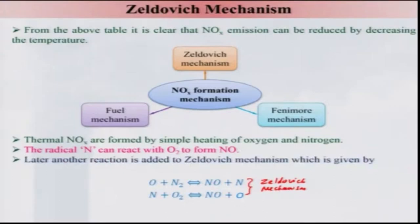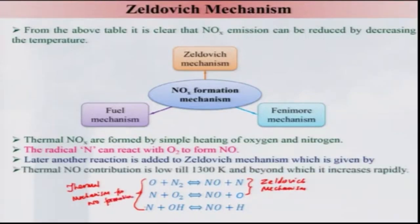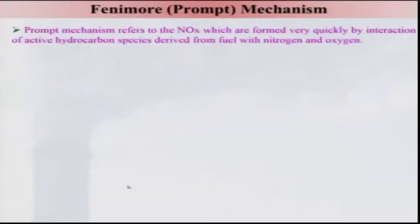Later, an additional reaction was added to the Zeldovich mechanism: N + OH → NO + H. These three reactions together are known as the thermal mechanism for NO formation. Thermal NO contribution is quite low until it attains a temperature of around 1300 K, beyond which it increases rapidly.